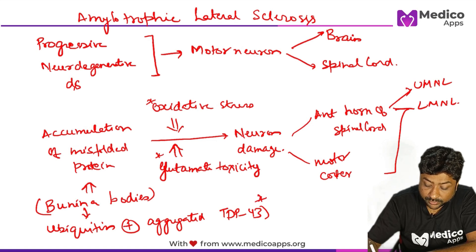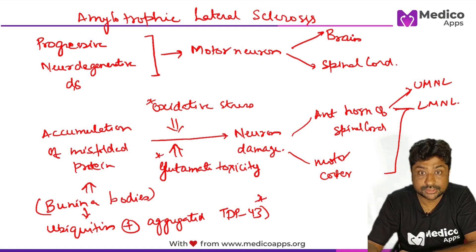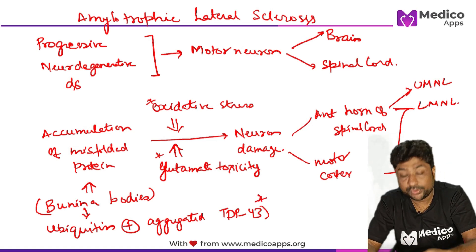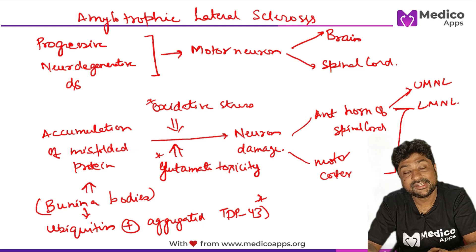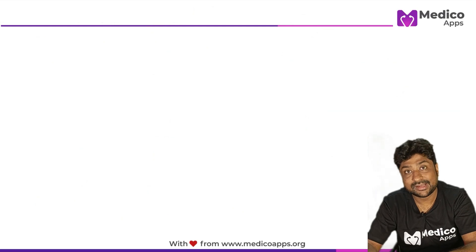Bunina bodies are ubiquitin-positive aggregates containing TDP-43. This is a question which has been asked — Bunina bodies are seen in amyotrophic lateral sclerosis.